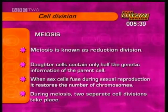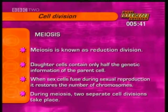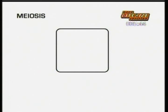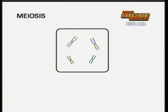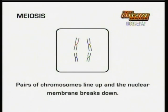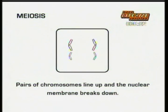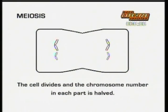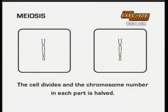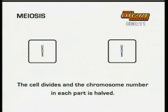During meiosis, two separate cell divisions take place. Just as in mitosis, when the cell is about to divide, the chromosomes become visible and produce replicas, each chromosome made of two chromatids. The next step is different from mitosis. Homologous pairs of chromosomes line up near the centre and the nuclear membrane breaks down. The homologous chromosomes move apart and the cell divides in two, and the chromosome number in each part is halved. This is called reduction division.